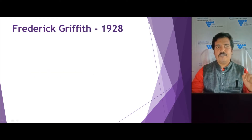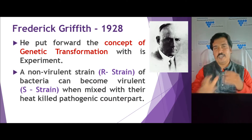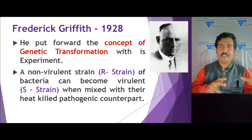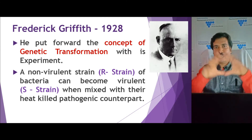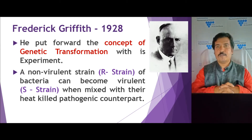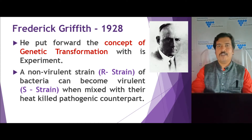Frederick Griffith put forward the concept of genetic transformation through his experiment. He took two strains of bacteria: one called the rough strain, which carries no membrane outside the cell and is rough in nature; and a smooth strain, which carries a capsule outside its cell wall, making it look smooth. Rough strains are generally non-virulent, whereas the smooth strain is virulent and can cause even death to an animal.